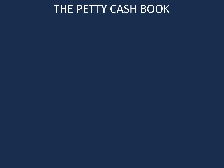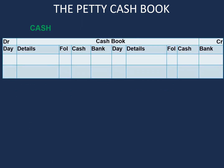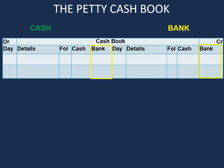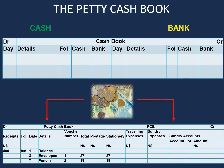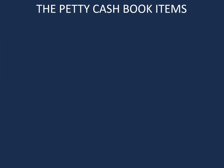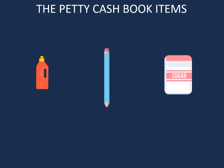Previously we learned that cash transactions are recorded in the cash column of our cash book, and transactions that affect the bank are recorded in the bank column of the cash book. But for small items we will record those transactions not in the cash book but in the petty cash book. Examples of those small items include detergent, stationery, sugar, or tea.